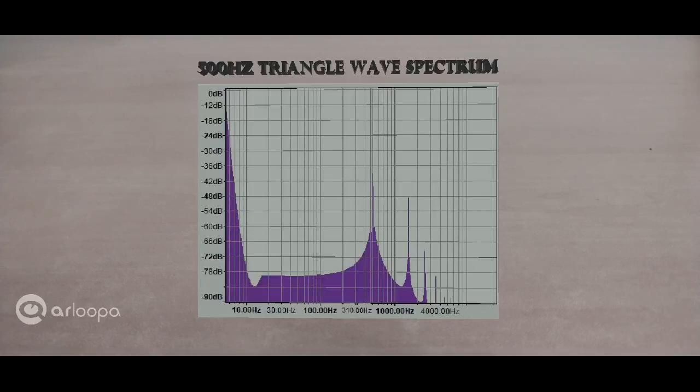Alright, in order to obtain a triangle wave, we need to perform additive synthesis using a bunch of sine waves. Before we do that, let's study the spectrograph of a 500 Hz triangle wave.